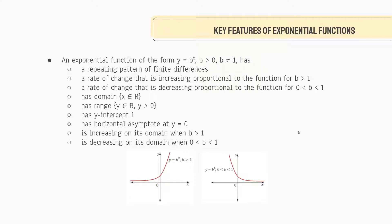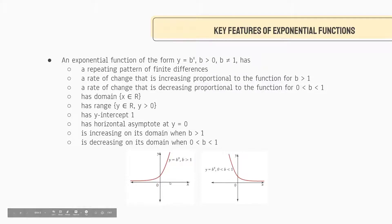Now let's get to the actual physical attributes of the function. First, it has a domain where x can be any real number, so there's no point where the graph is not defined. However, its range is restricted: y is an element of all real numbers, but y must be greater than 0. The reason is that at no point can we get a negative number — if we did, we'd need the root of a negative number, which is impossible.